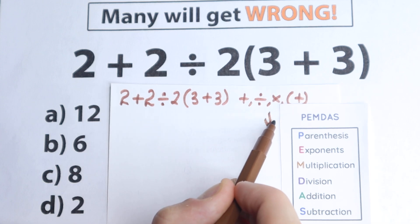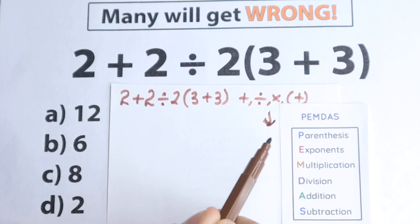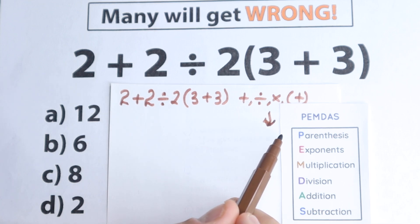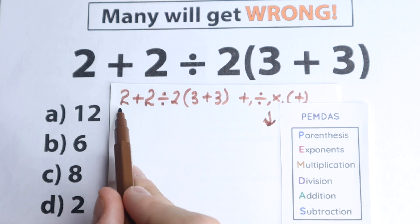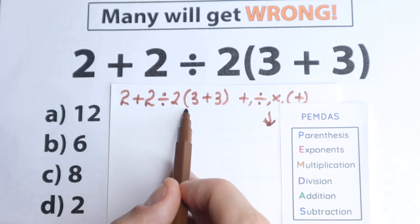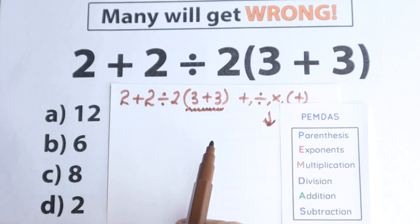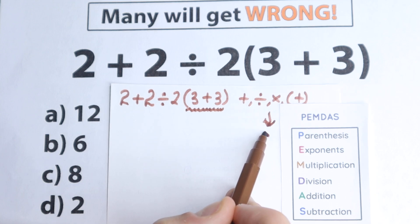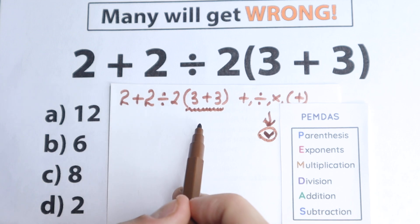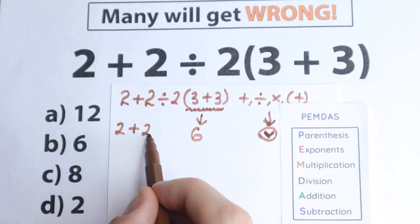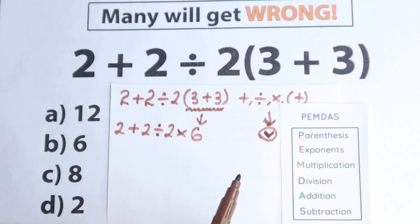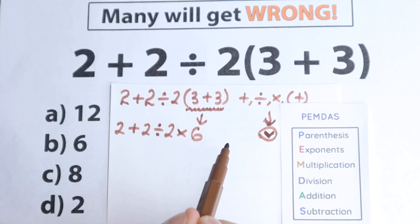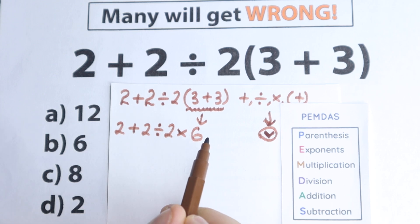PMDMC works from the top to the bottom through six steps. The first letter is P — parentheses. We need to look at where we have parentheses: 2 plus 2, division sign, and right here we have parentheses with 3 plus 3. We start with these parentheses, and 3 plus 3 equals 6. So after the first step we have the expression: 2 plus 2 divided by 2 times 6.